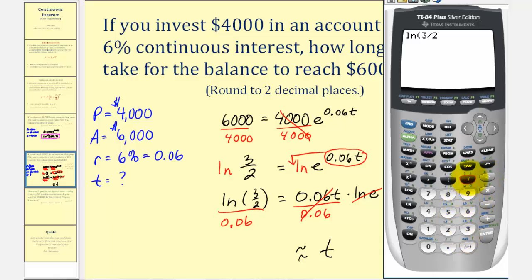Closed parenthesis, divided by 0.06. And so it's going to take approximately 6.76 years for this $4,000 to grow to $6,000 if it earns 6% continuous interest.